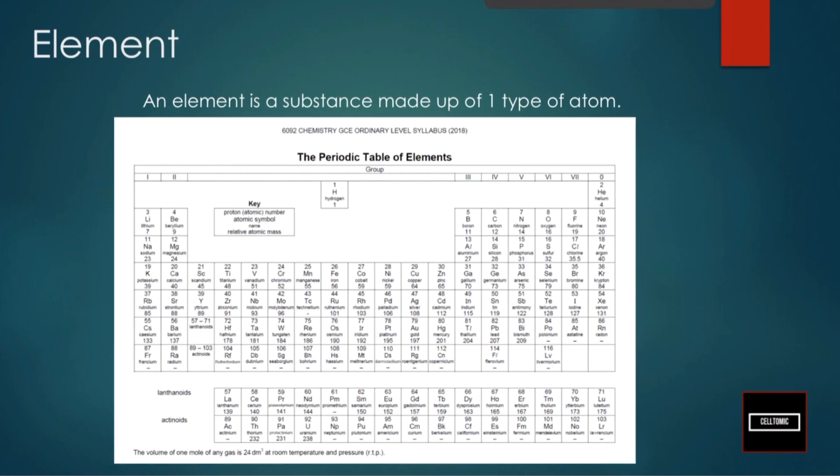So elements. Element is a substance made up of one type of atom. Examples of elements are stuff that you can find on the periodic table. So everything here is an example of elements.